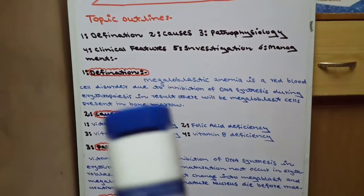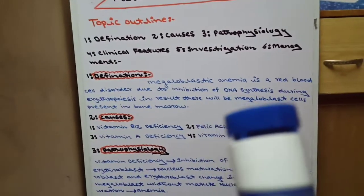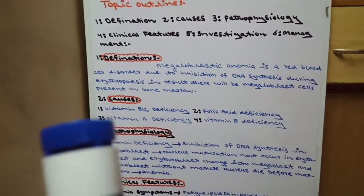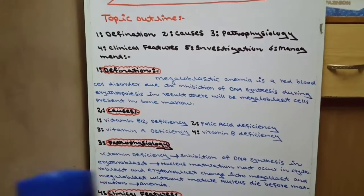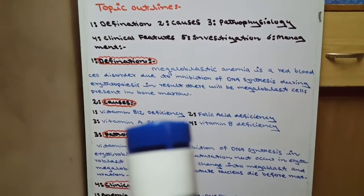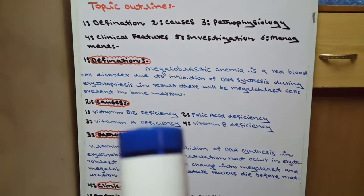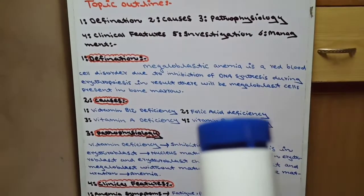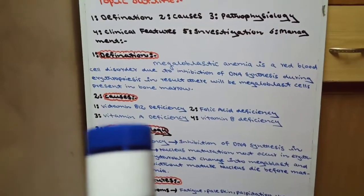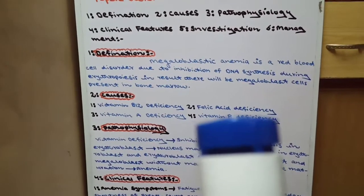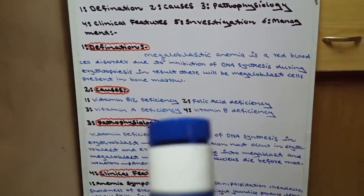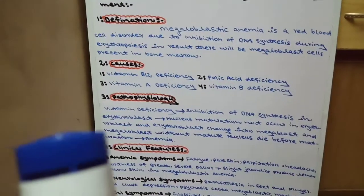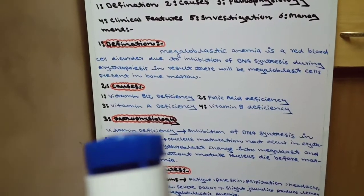Causes kya hain? Pehla cause hai Vitamin B12 deficiency. Doosra hai folic acid deficiency, isko folate deficiency bhi kehte hain. Teesra hai Vitamin A deficiency. Aur chautha hai Vitamin B deficiency. Toh yeh 4 causes hain megaloblastic anemia ke.